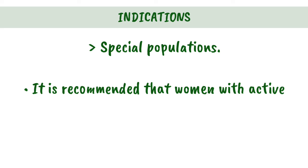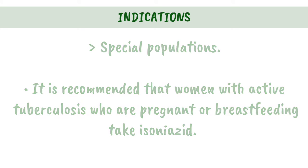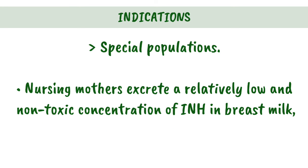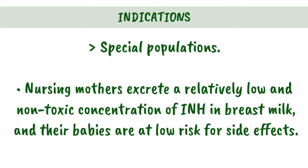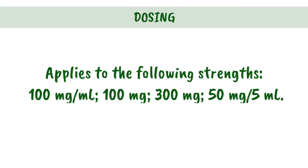Special Populations: It is recommended that women with active tuberculosis who are pregnant or breastfeeding take isoniazid. Nursing mothers excrete a relatively low and non-toxic concentration of INH in breast milk, and their babies are at low risk for side effects.